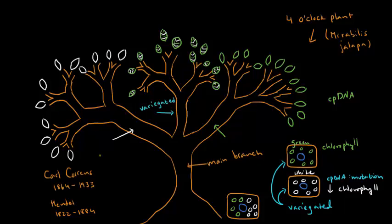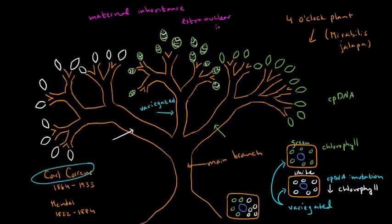What Korins noticed when he crossed a whole bunch of these plants together was that the progeny had nothing to do with the sperm cell or the pollen cell — it had only to do with the egg cell. Wherever he took the seed from, if he took it from a branch with only white leaves, all the progeny had only white leaves, no matter what the pollen cell was. The same was true for green leaves. This is because the trait we're looking at — leaf color — is determined by the DNA in the chloroplast, and the chloroplast exhibits maternal inheritance. It is inherited only through the egg cell, or through the maternal line. Another way to say this is that it exhibits extranuclear inheritance, because the chloroplast has DNA that's outside of the nucleus.